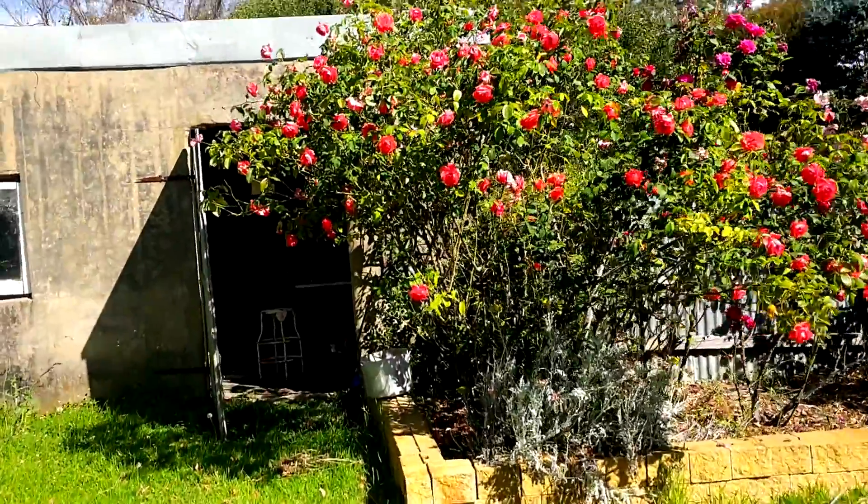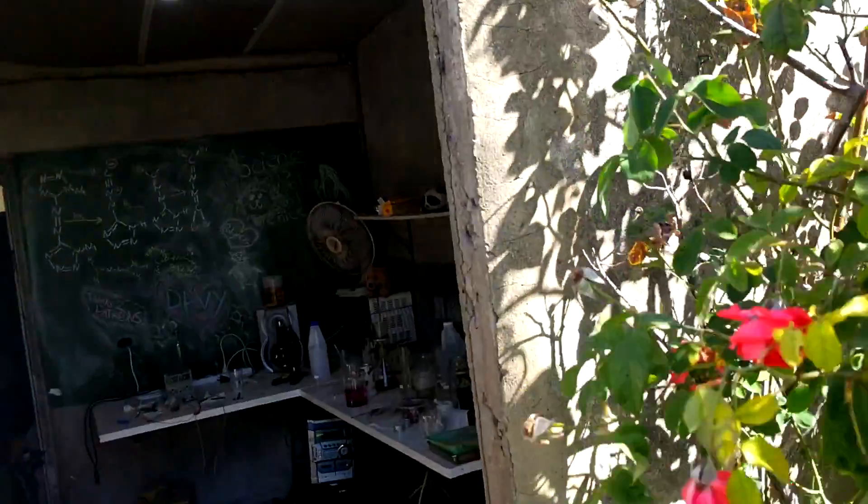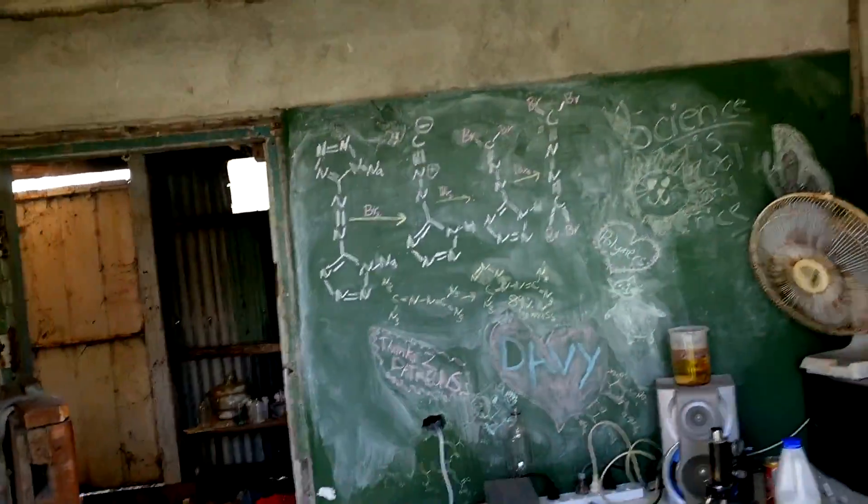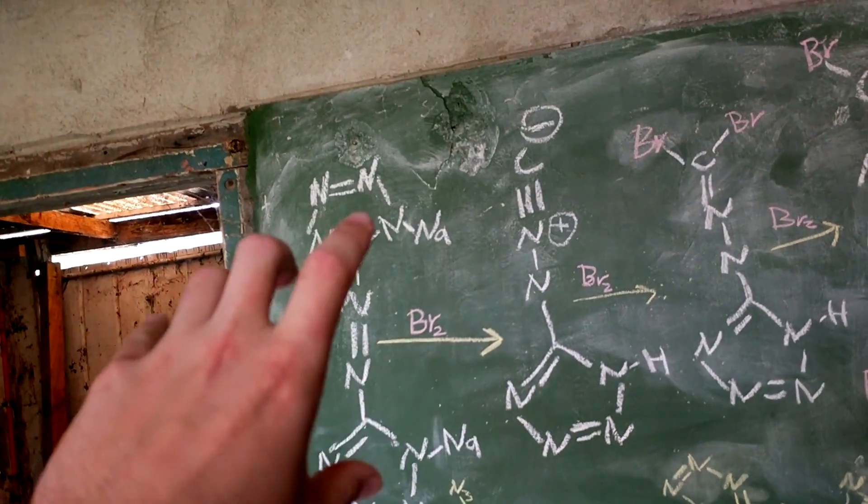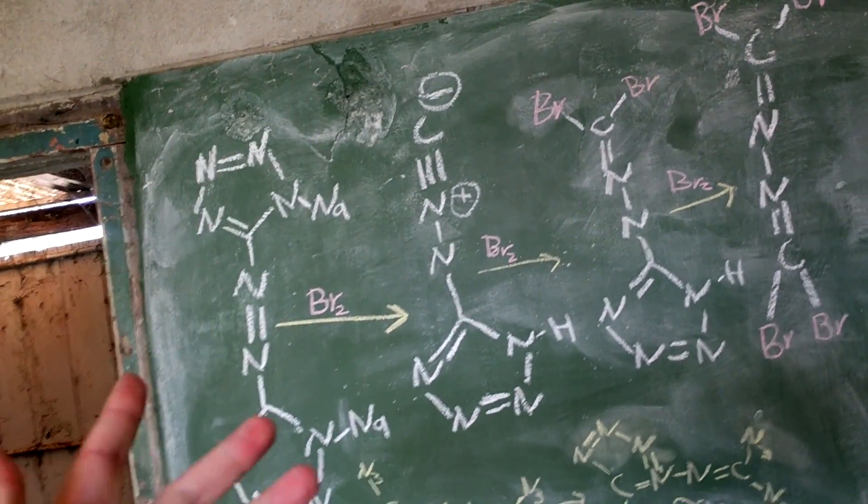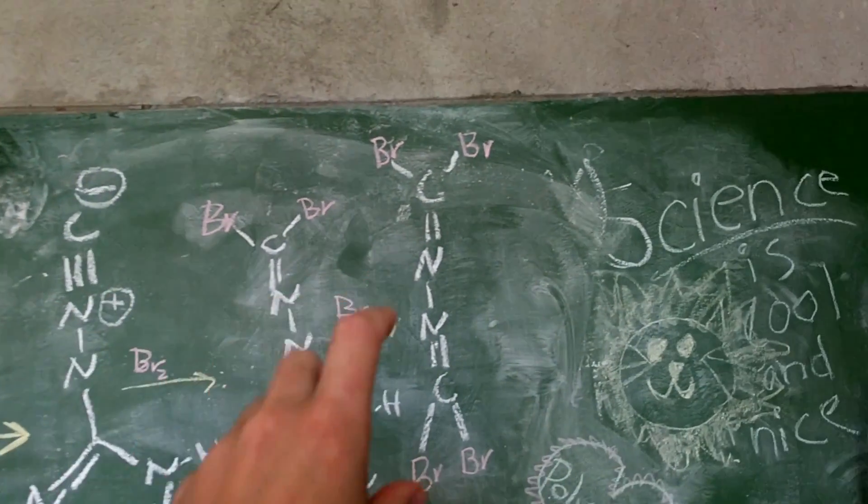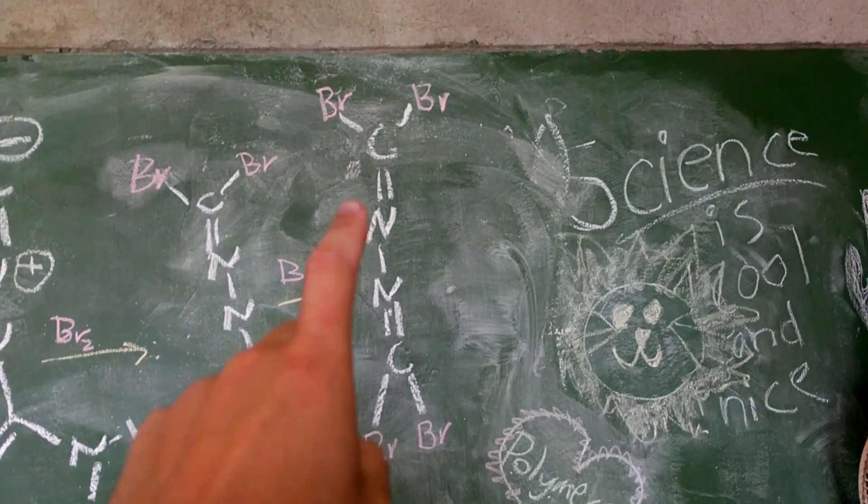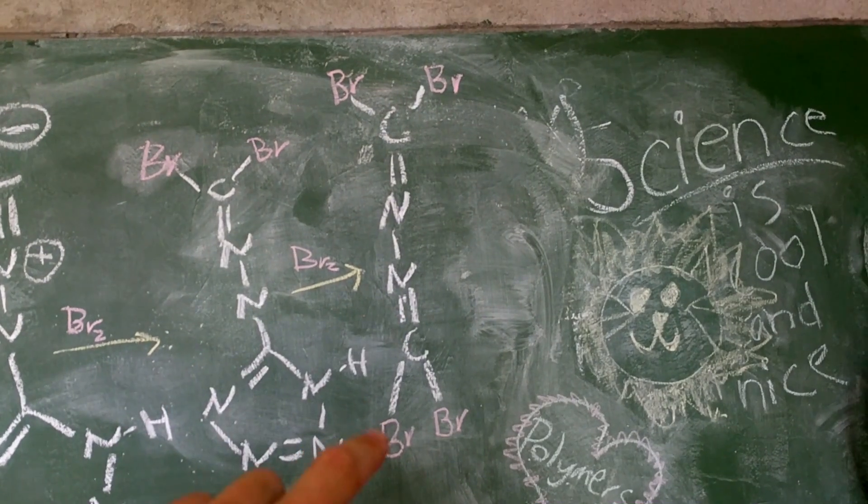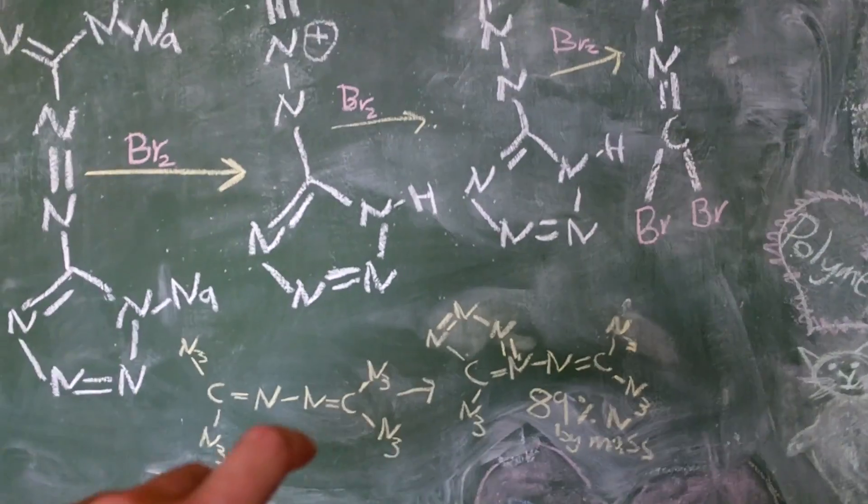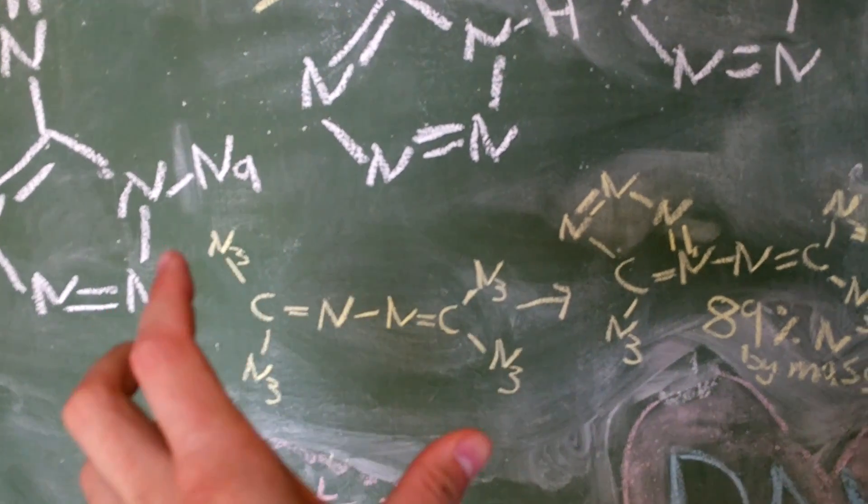Today we're going to be following on from another write-up by a guy called Engager, who did this publication about tetrazoles. We'll be following on from our last video in which we made disodium-5,5-azotetrazole, which is this compound here. What we're making that for is to make this product here, the tetrabrominated isocyanogen, so isocyanogen tetrabromide. We can then replace those four bromine groups with four azide groups, and we can make this compound here, isocyanogen tetraazide.